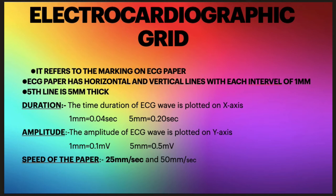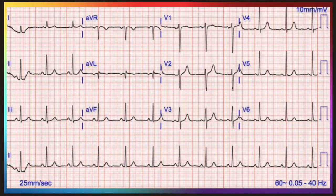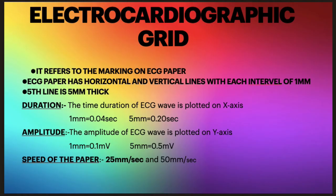On the x-axis we plot the duration or time of the ECG wave, and on the y-axis we plot the amplitude. One small 1 mm square on the x-axis represents 0.04 seconds, and the 5 mm thick line represents 0.20 seconds. On the y-axis, 1 mm equals 0.1 mV and 5 mm equals 0.5 mV. I am showing you the paper again — the x-axis represents time duration and the y-axis represents amplitude.